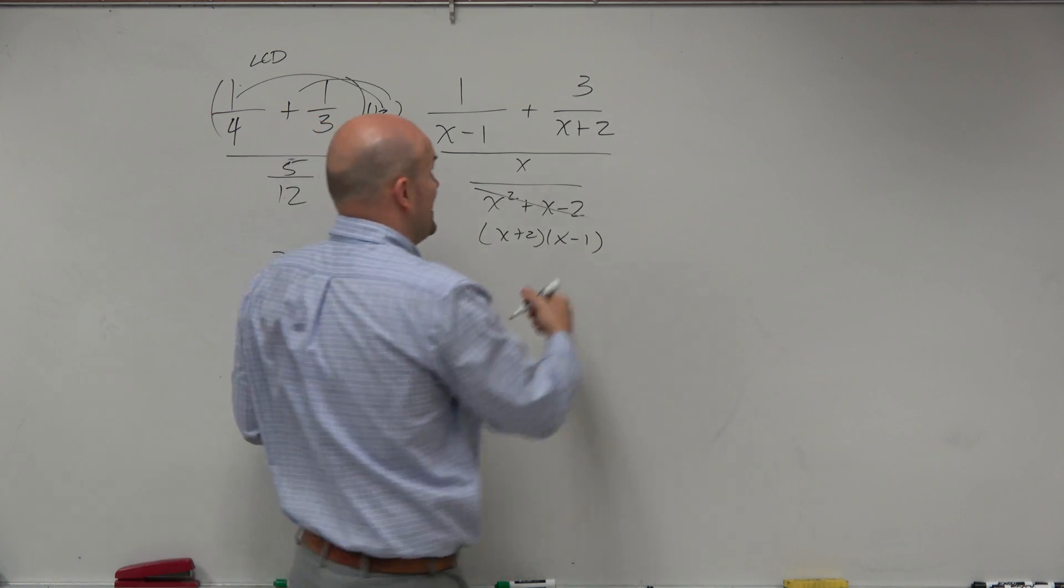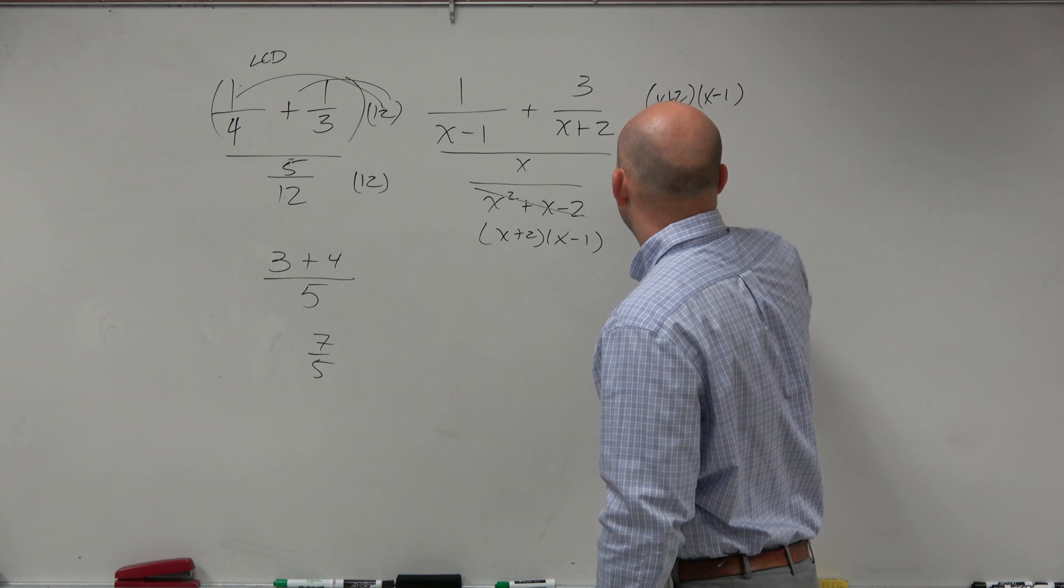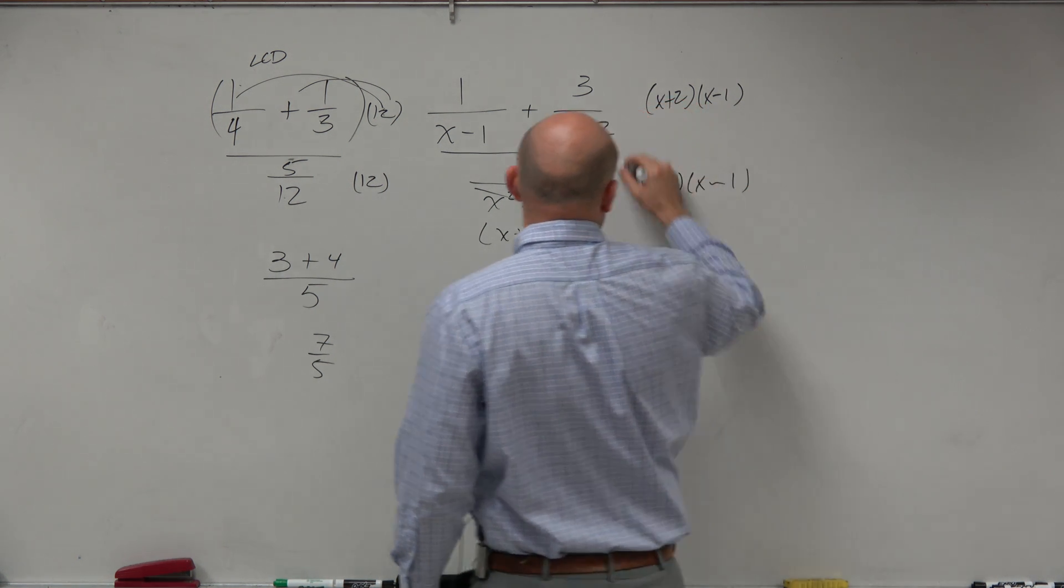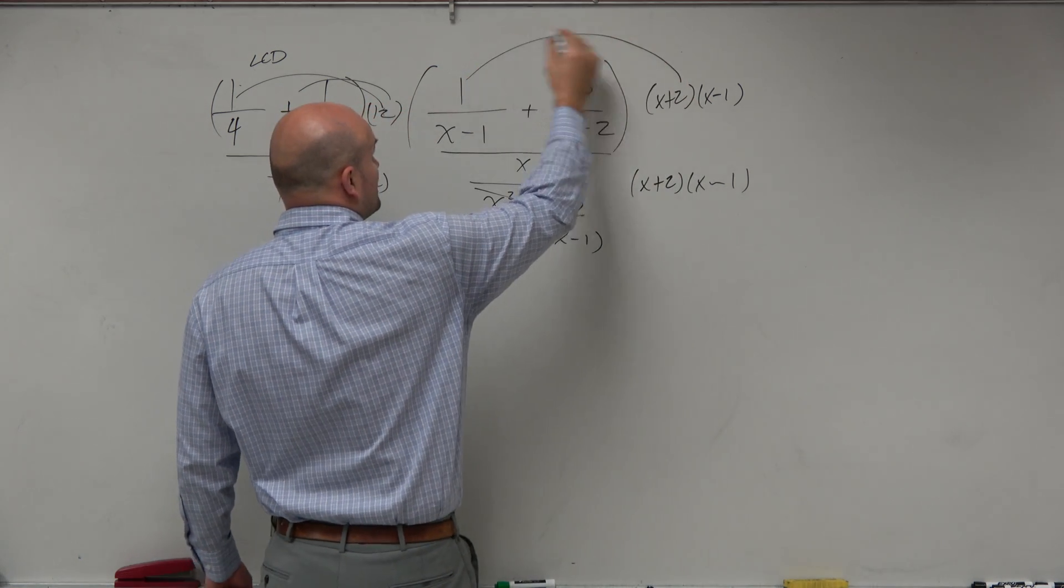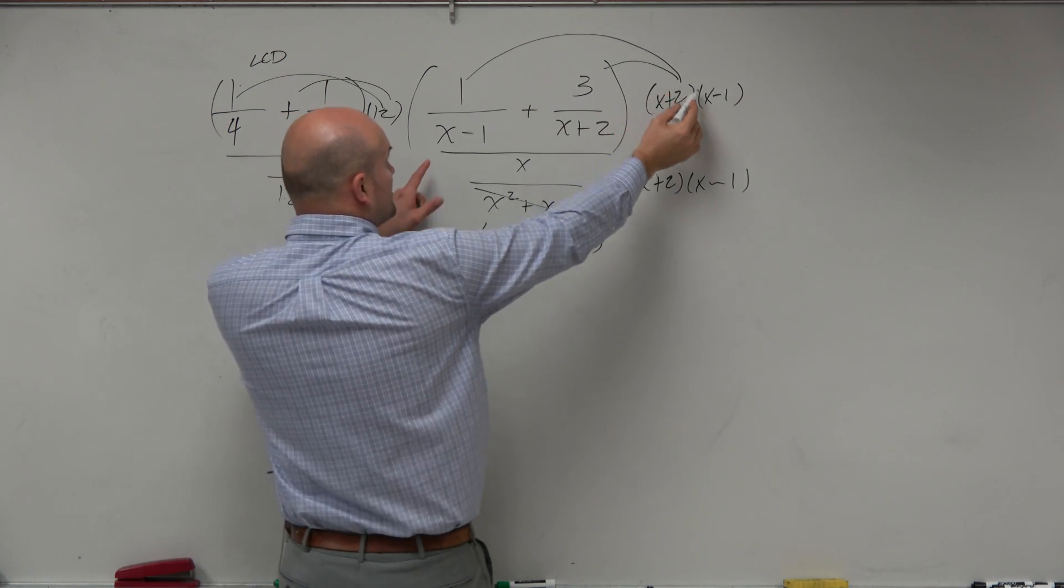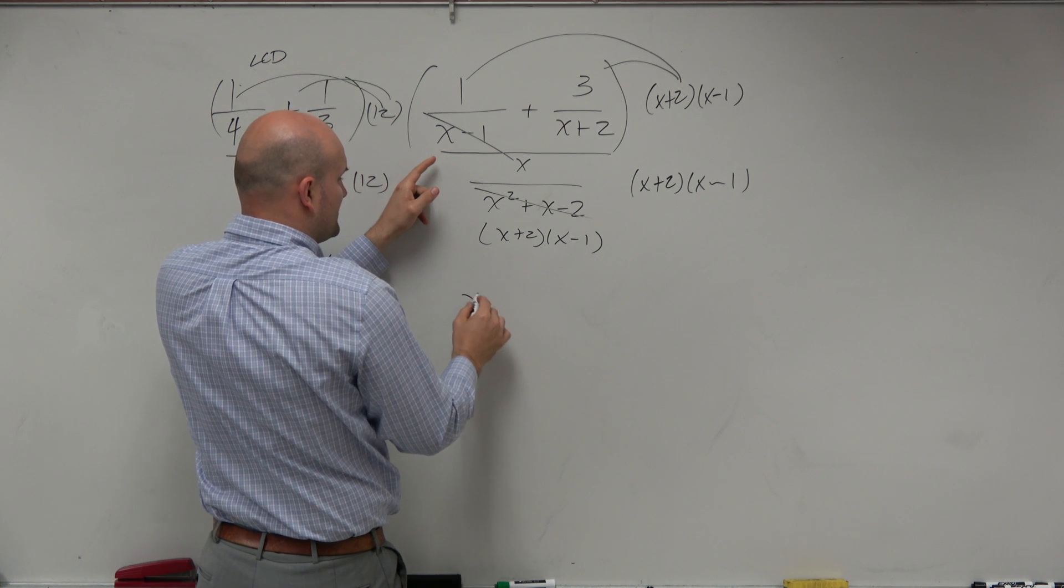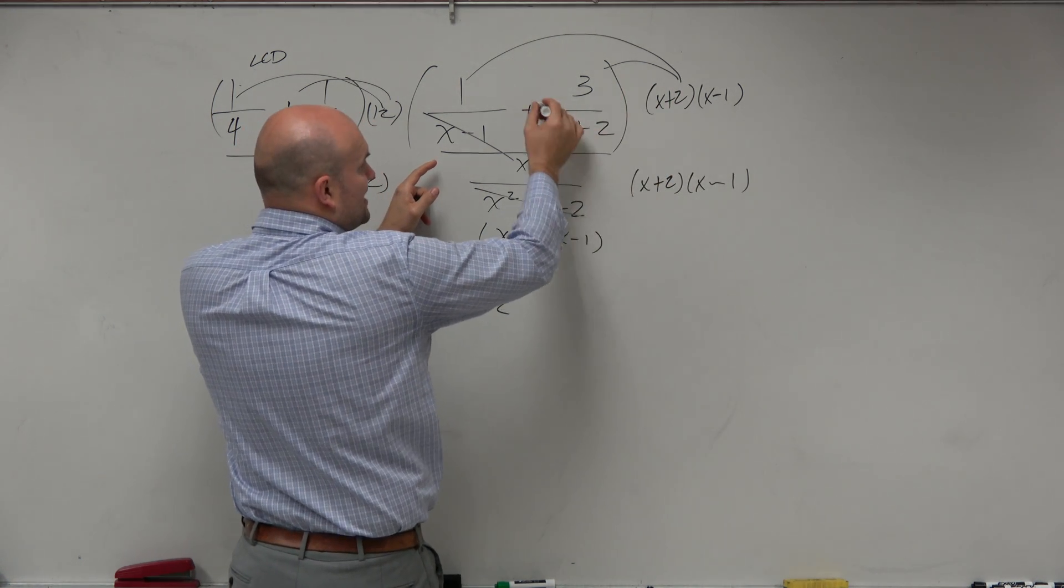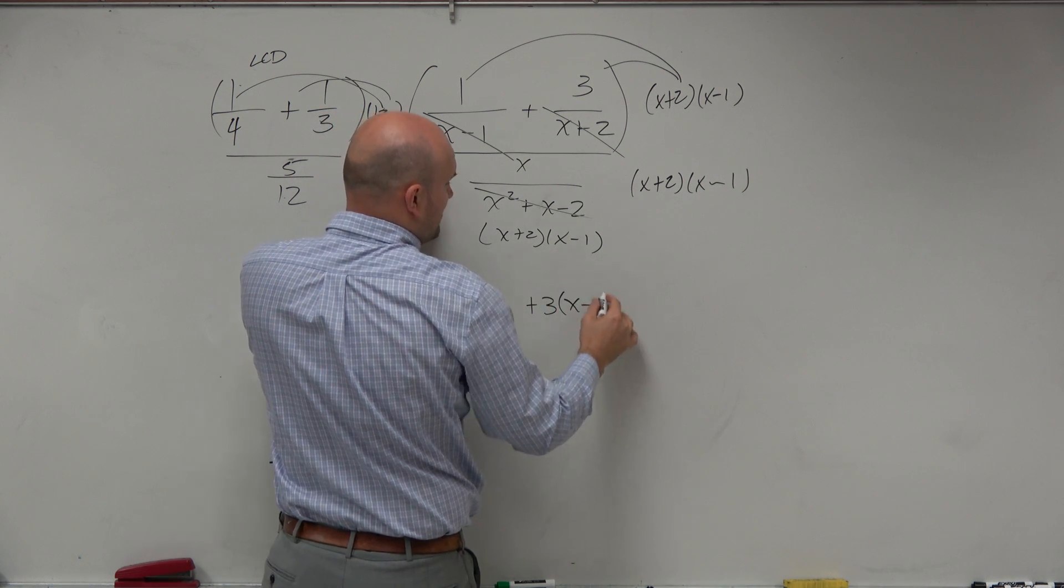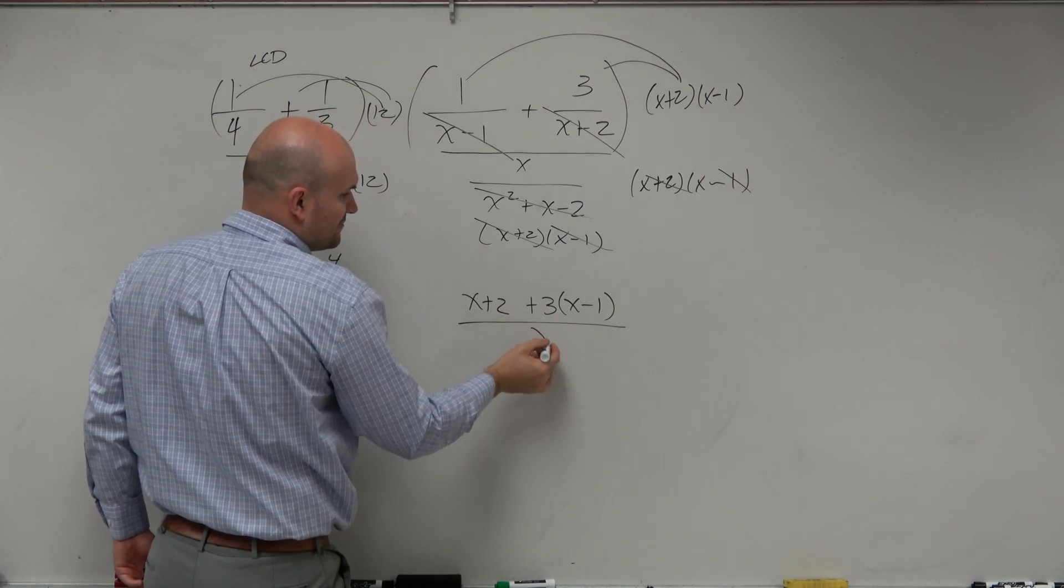So now if I multiply everything on my top times x plus 2 over x minus 1 and then the denominator by x plus 2 over x minus 1. Now remember to put these in parentheses because you have to apply distributed property. Well, let's do the numerator. So if I divide this expression times x minus 1's, the x minus 1's divide out and I'd be left with x plus 2. If I multiply this times this, the x plus 2's divide out and I'm left with 3 times x minus 1. For my denominator, they all divide out and I'm just left with an x.